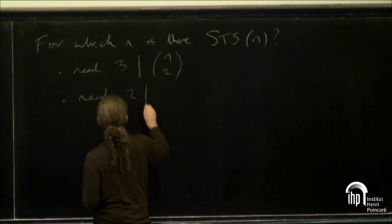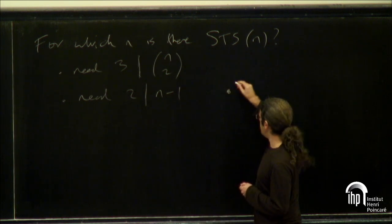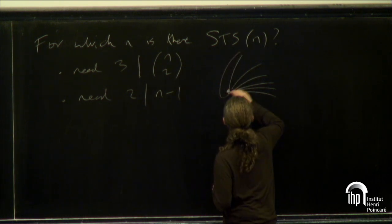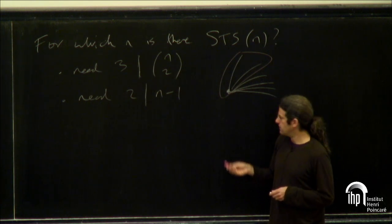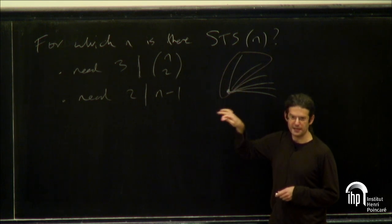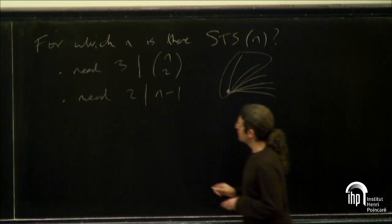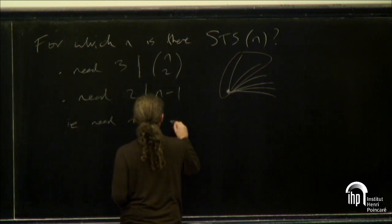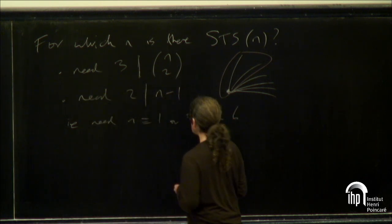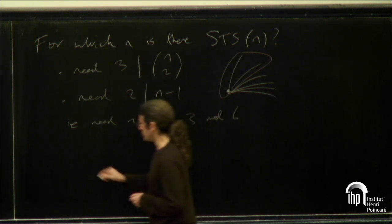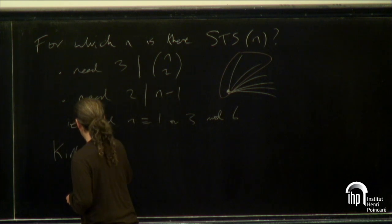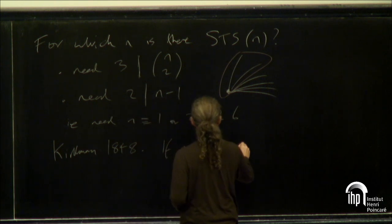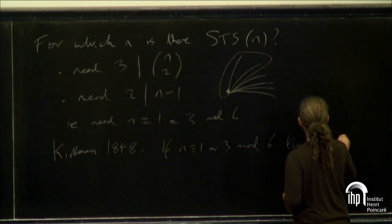If I fix some point and look at all pairs containing that point, every triple containing it covers two such pairs, so two must divide n minus one. These conditions rephrase to n congruent to 1 or 3 mod 6. Kirkman showed this is also a sufficient condition: if n is congruent to 1 or 3 mod 6, then there is a Steiner triple system of order n.